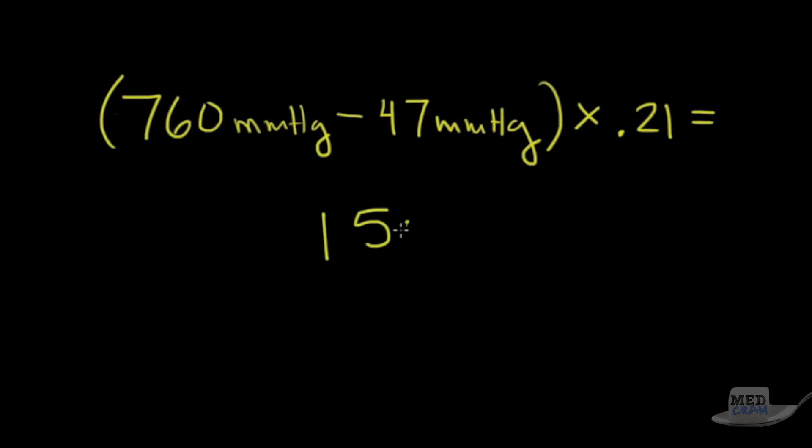Let me give you an example. So at sea level, we've got 760 millimeters of mercury. Now, as soon as you inspire this air at sea level into your lungs, it becomes humidified. And this is kind of a red herring we're throwing into this. But you should know that the saturated vapor pressure is about 47 millimeters of mercury. And so right off the bat, 760 minus 47 times 0.21 is equal to 150 millimeters of mercury.